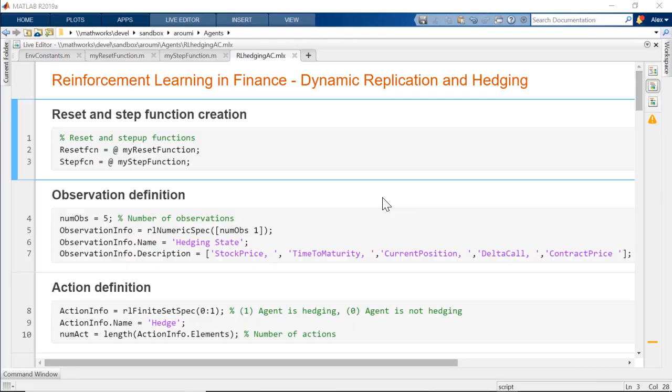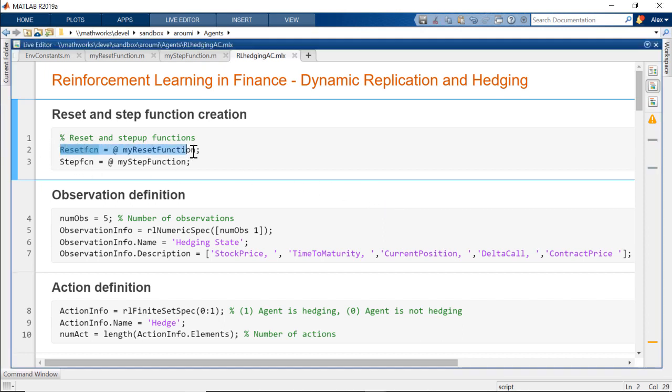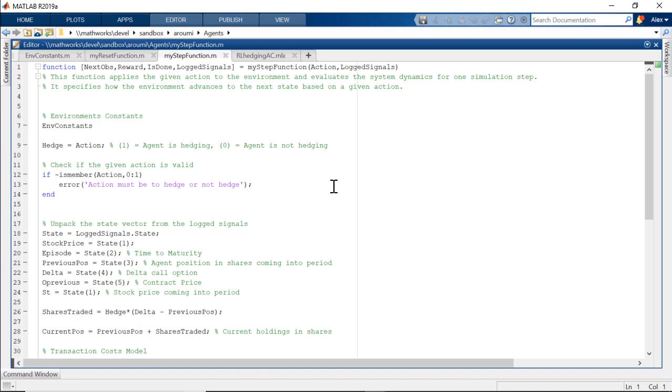MATLAB makes it easier to set up the environment and design the reinforcement learning components. The reset function returns the initial state of the environment and is called at the beginning of each training episode. The step function specifies how the environment advances to the next state based on which action the agent takes.